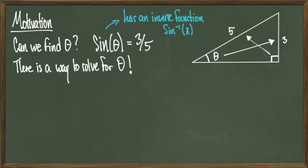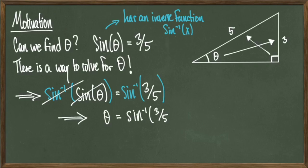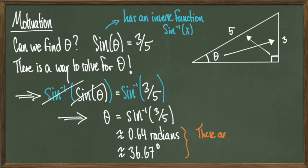In other words, is it possible to solve for theta? The sine function actually has an inverse, and that's denoted sine inverse of x. If we take for granted that this exists, I can look at sine theta equals 3 over 5, take sine inverse of both sides, and by the nature of inverses, sine inverse and sine will cancel each other out, leaving us with theta. Therefore, theta equals sine inverse of 3 over 5, which comes out to 0.64 radians or 36.67 degrees.